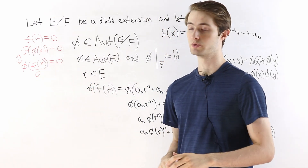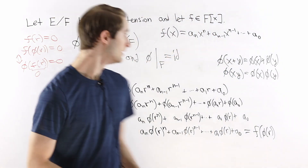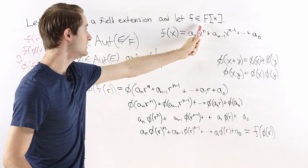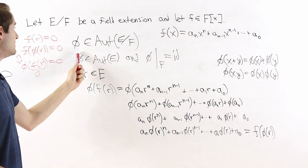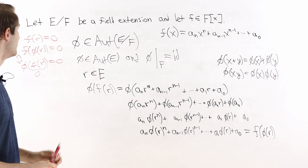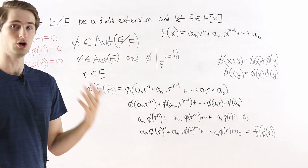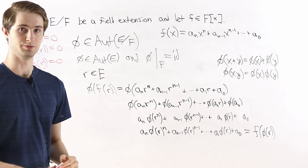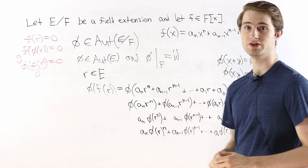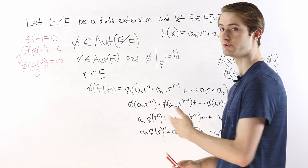So we have proved that if E is a field extension of F, f is a polynomial with coefficients in the base field, phi is an automorphism of the field extension E over F, and r is a root of this polynomial, then phi of r is also a root of the same polynomial. In other words, if we're considering a polynomial with coefficients in the base field, then an automorphism of a field extension will map roots to roots.